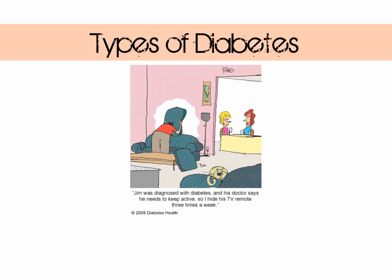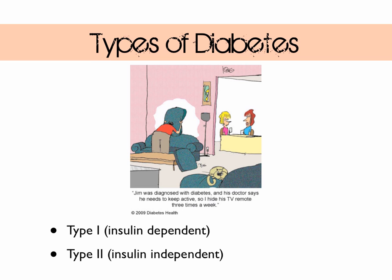Diabetes is a metabolic condition that's quite common. 1.4 million people in the UK have diabetes and a further 1 million UK citizens are thought to have the condition but are not currently aware of it. There are two forms of diabetes: type 1 and type 2. Type 1 is also known as insulin dependent diabetes whereas type 2 is known as insulin independent diabetes, and the reason for these names will become clear.